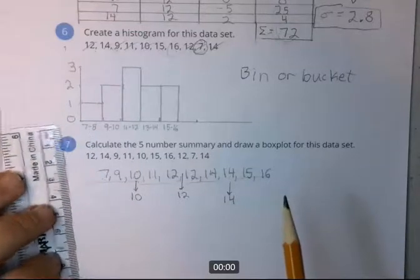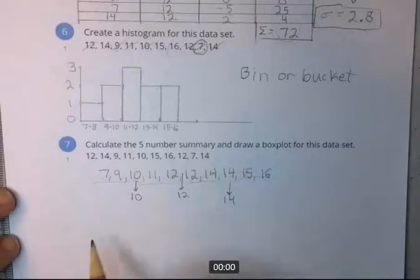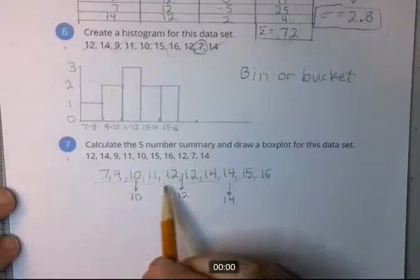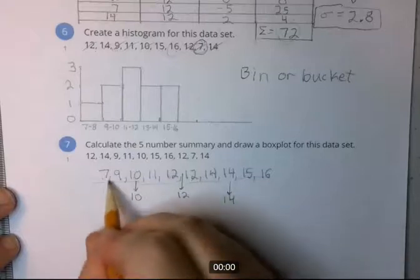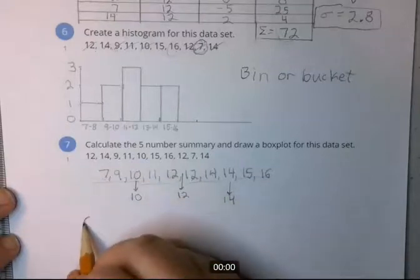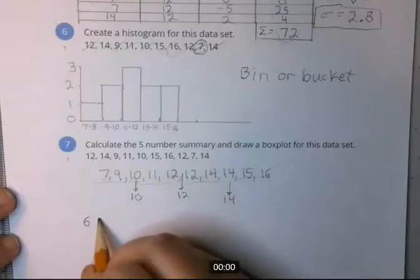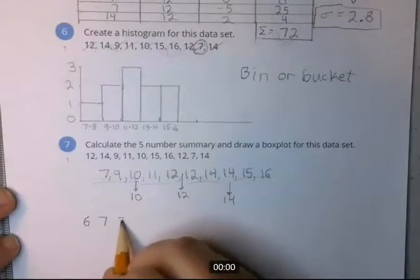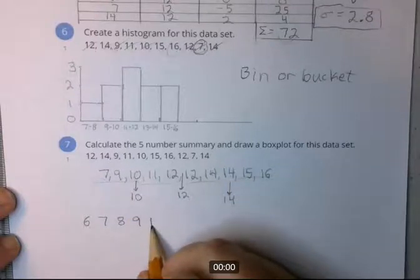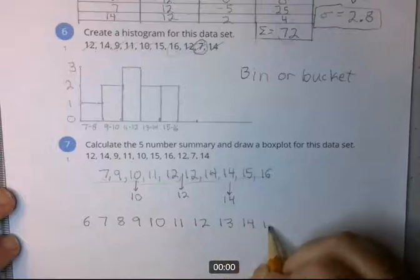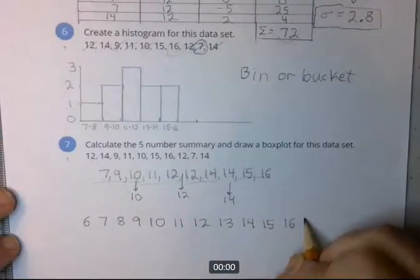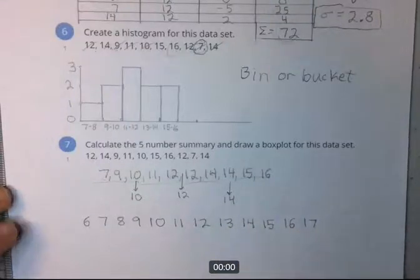And the first thing that you do though is you draw a number line that is a complete number line. This is not complete. So I'm going to start one number before the 7. Okay, then the next number is going to be 7, 8. So I'm including numbers that aren't part of this set. I'm just drawing a number line. 10, and I'll go one past the 16, 17.